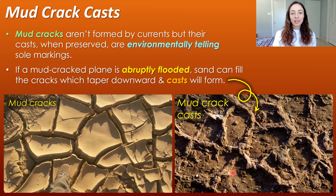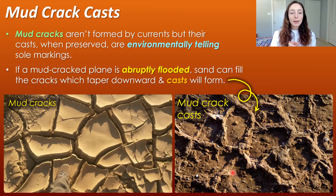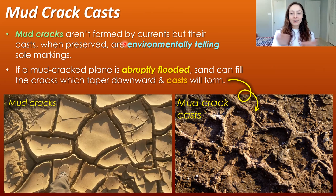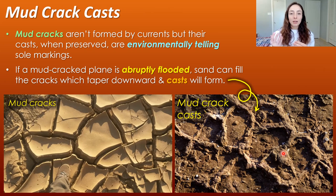The next type of bedding plane marking is mud crack casts. Mud cracks, covered in the previous sedimentary structures video, are cracks in mud formed by the drying up of muddy planes — not by currents. They can't preserve as cracks because cracks are voids. So they preserve by forming casts: the cracked mud gets abruptly overlaid by sand — perhaps from a flood — which fills the cracks, becomes lithified, and forms mud crack casts. That would be a sole marking because it's on the bottom of the sandstone bed that preserved the mud crack casts.